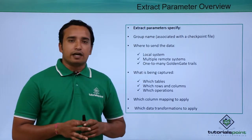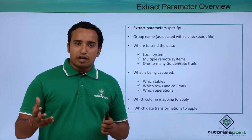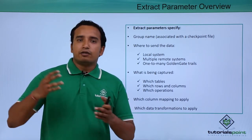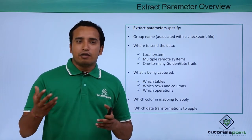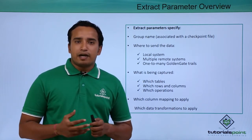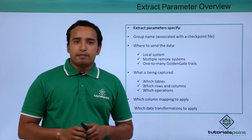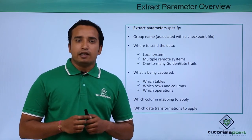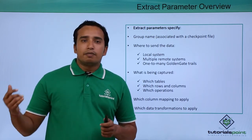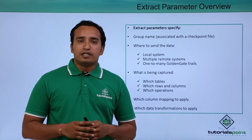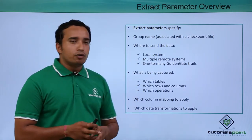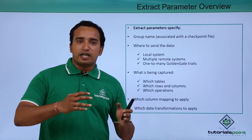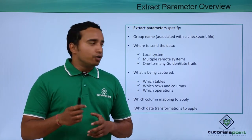Next, where do you want to send the data? You can send the data to a trail file, a normal file, or directly to the replicate. If you want to send the data to an extract trail file, you use the extrial parameter in the extract parameter list. You can also send data to multiple trail files, or send the data directly to the replicate at the target system.